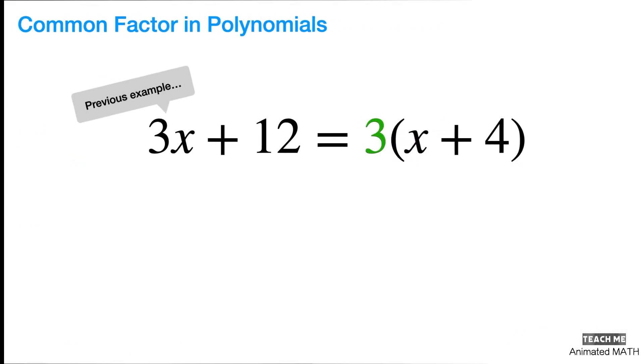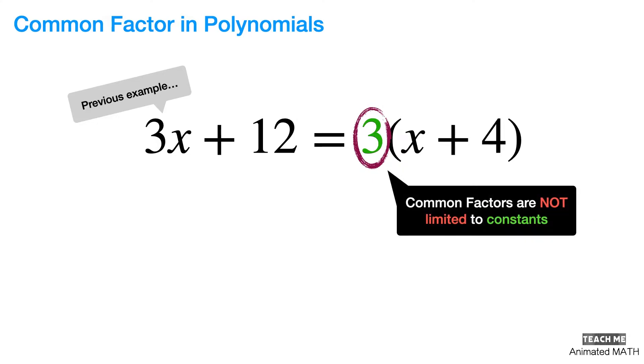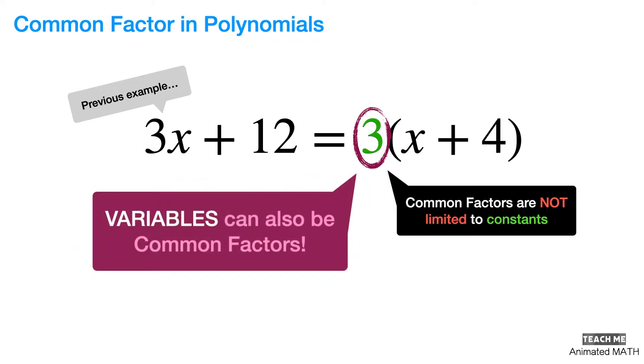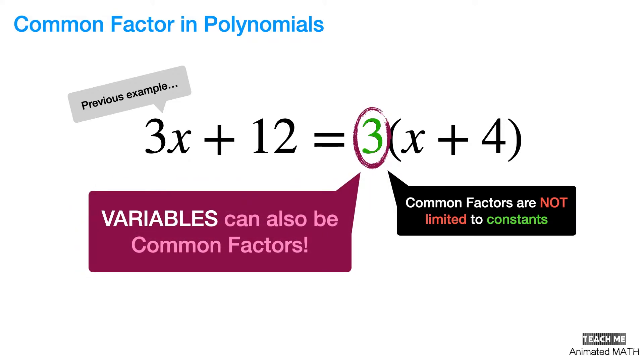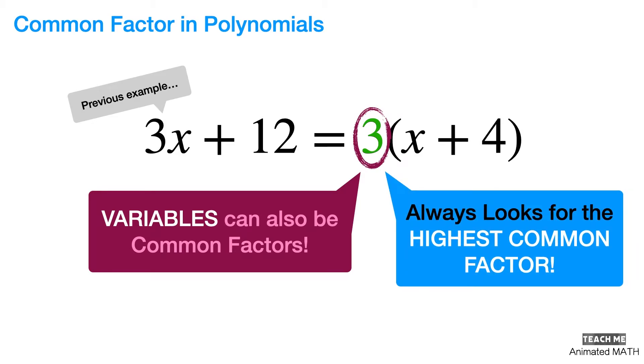The previous example showed that 3x and 12 had a common factor of 3, but the common factor isn't limited to just constants. Variables can also be included in the common factor. The rule of thumb is that we always look for the highest common factor, like the GCF or greatest common factor when factoring whole numbers and integers. Let's amp things up by factoring both constants and variables alike.